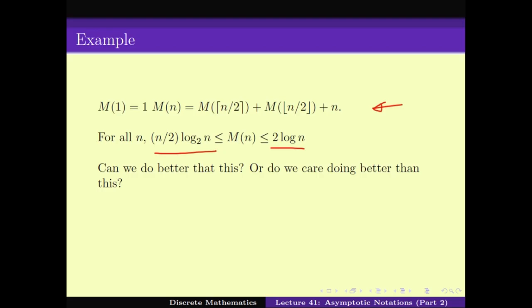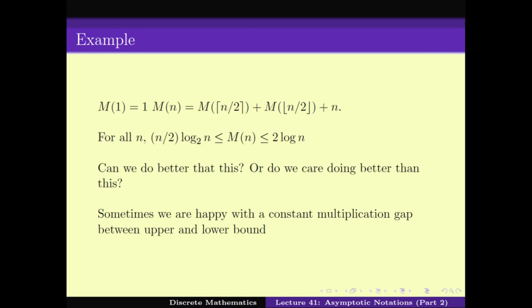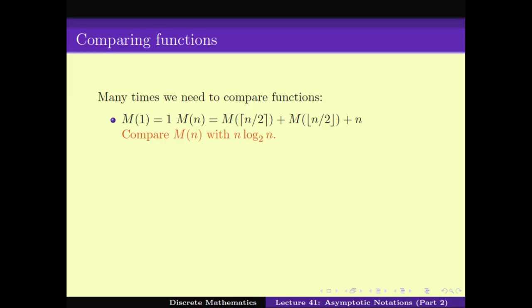This brings us to a problem of comparing solutions. Sometimes we are happy with just a constant multiplication gap between the upper and lower bounds. When we compare functions, how do we compare? For example, in the merge sort case where m(1) and m(2) are given by a recurrence relation, can we compare m(n) with n log n? What we got was that we could upper bound m(n) as 2 times n log n and lower bound by half of n log n. That is one kind of comparison.